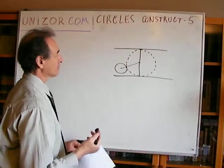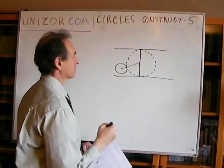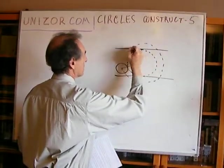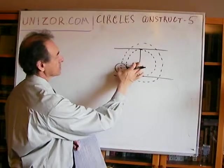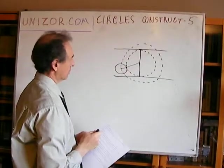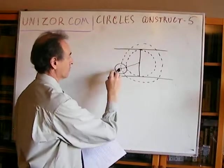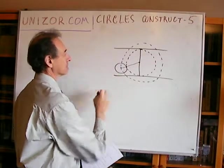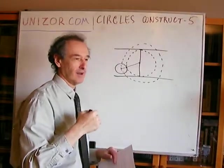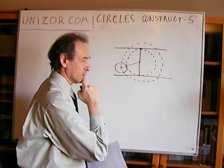The easiest approach is, instead of constructing this circle, let's construct a bigger circle concentric to the given one. This bigger radius is larger than the one we need by the radius of the small given circle. Why is it easier? Because it contains the center as a point rather than being tangential to a circle.